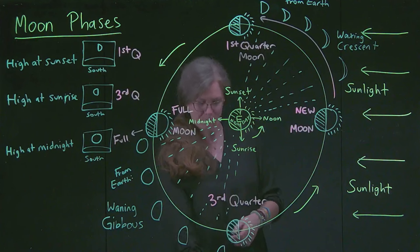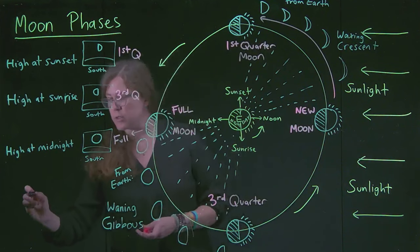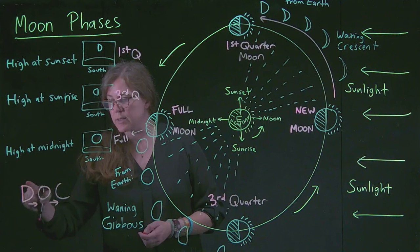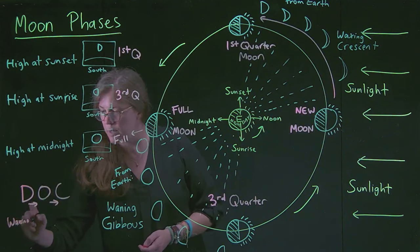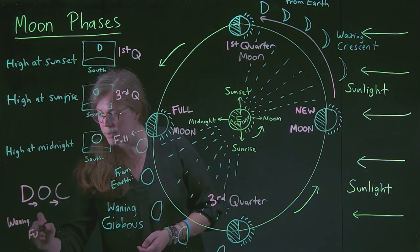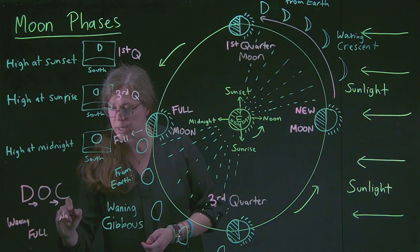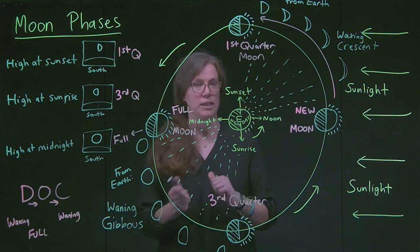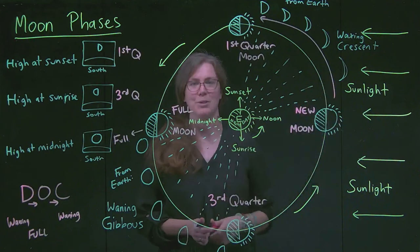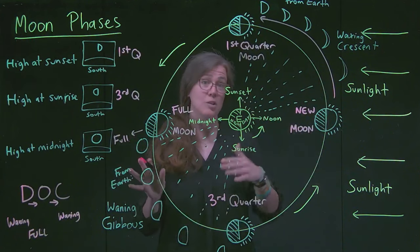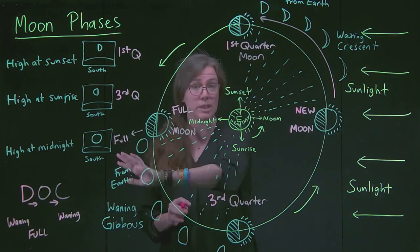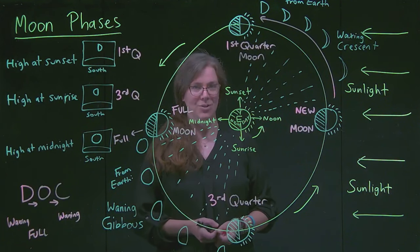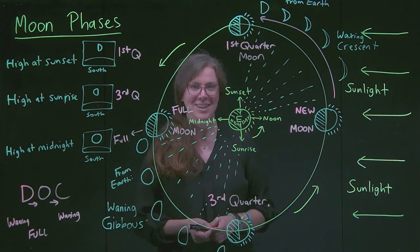The last thing I'll leave you with is a mnemonic that a student told me about: DOC. The D shape — right side lit — is when the Moon is waxing. When we see the whole circle, O, we have a full Moon. When we see the left side lit, C, we have a waning Moon. So DOC can help you keep track of which side of the Moon is lit up for different parts of the cycle. There's a lot here, but this is why we build from scratch. You can always go back and rewatch and redraw. Thanks for watching, and I'll see you in the next one.